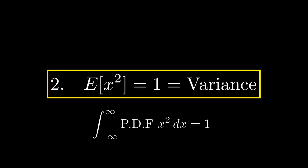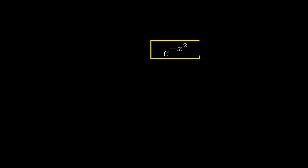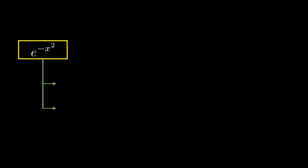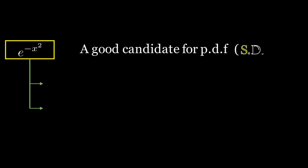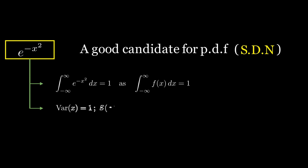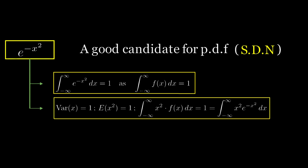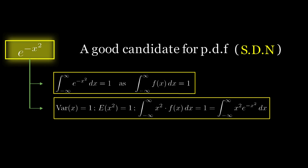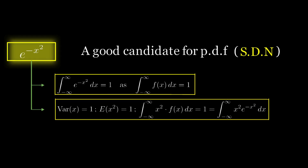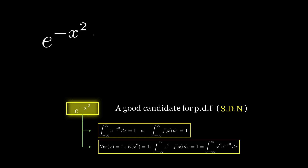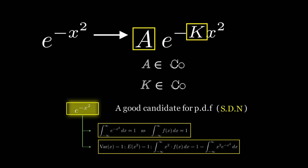Take one property at a time. We now have two equations to test our PDF against: one, the PDF integration must equal 1, and two, the variance of standard normal distribution equals 1. The most perfect candidate to test is e^(-x²). To ease the effort, assume the equation is not e^(-x²) but a · e^(-kx²), where a and k are constants. At the end, solving these two equations will give us a and k.